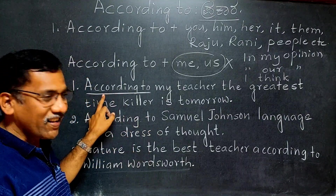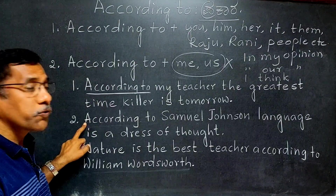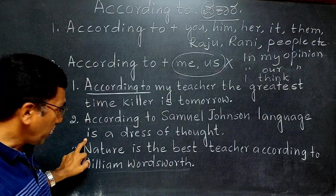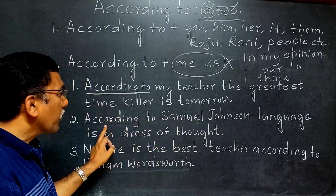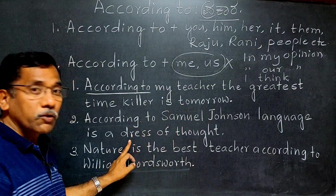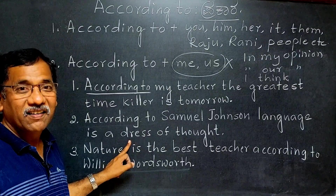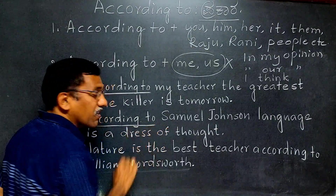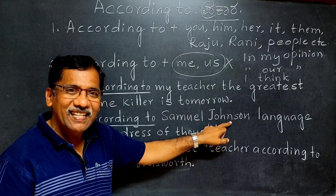Second example: 'According to Samuel Johnson, language is a dress of thought.' This means — Samuel Johnsona prakara, bhaasheyanu vichaarada udupa agiruttade, dress agiruttade. Here, 'according to' is a preposition used before a noun.